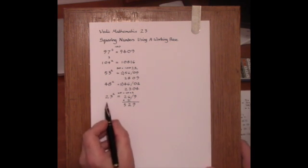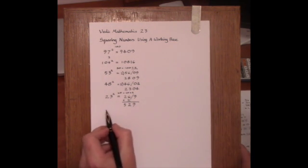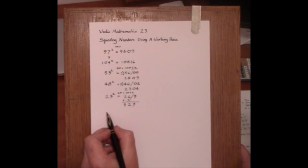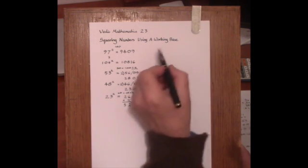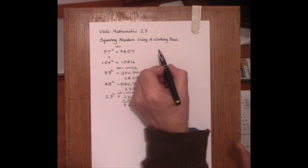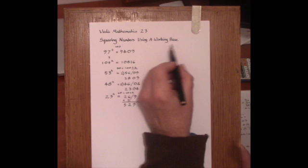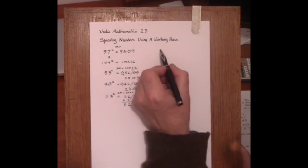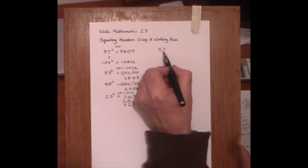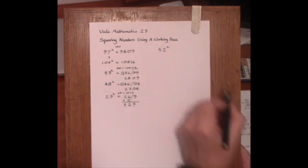Another example going back to, let's have a look at a method a student of mine, Lydia, she showed me something rather interesting about using 50 as a working base, so let's just examine this. It's quite interesting. So if we take, go back to 50, we'll take 52 squared as an example.